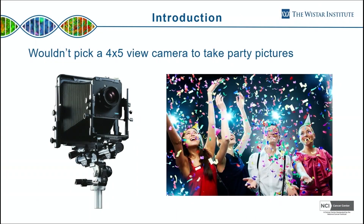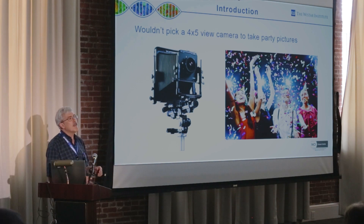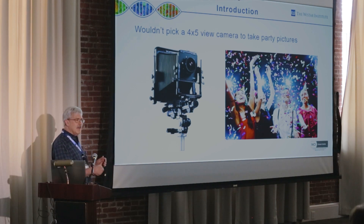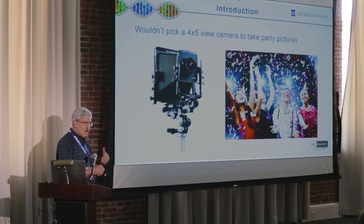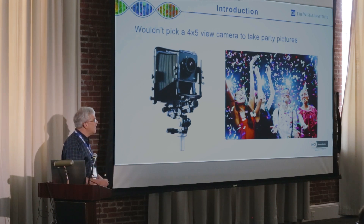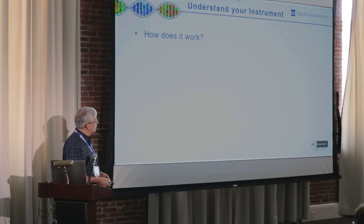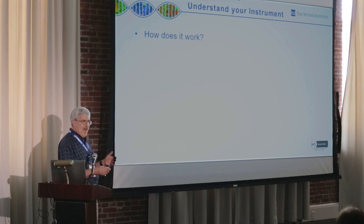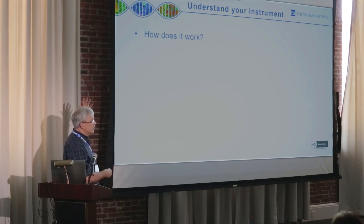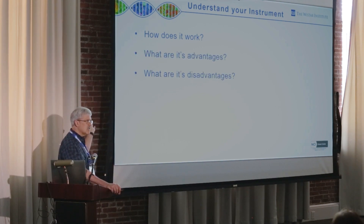You're not going to pick a 4x5 camera to shoot party pictures, right? Likewise, you're not going to pick the wrong microscope to do 3D time-lapse mitochondrial dynamics. You have to look at your instrument as a really fancy camera and ask the simple question: how does the thing work, what are its advantages, and what are its disadvantages versus other potential options?